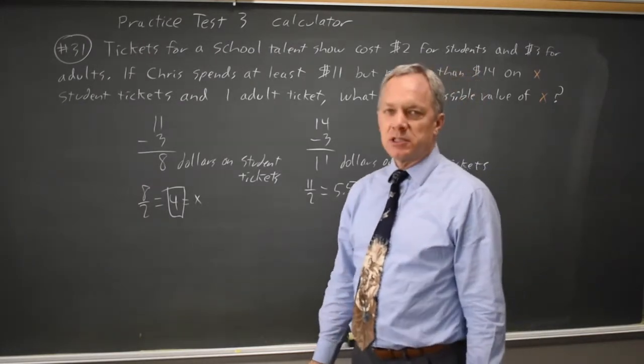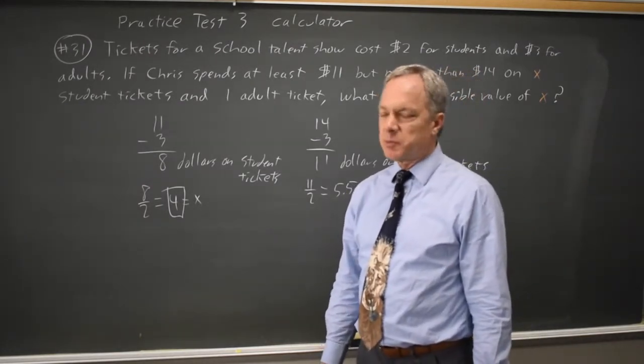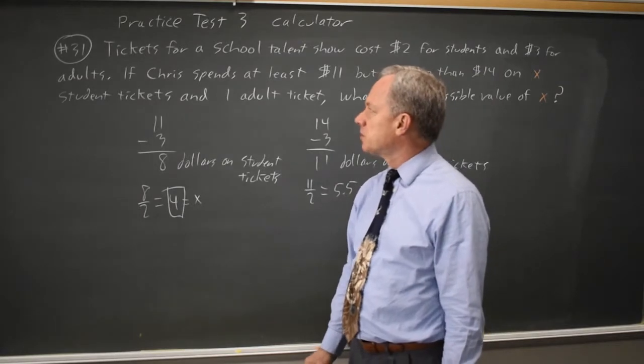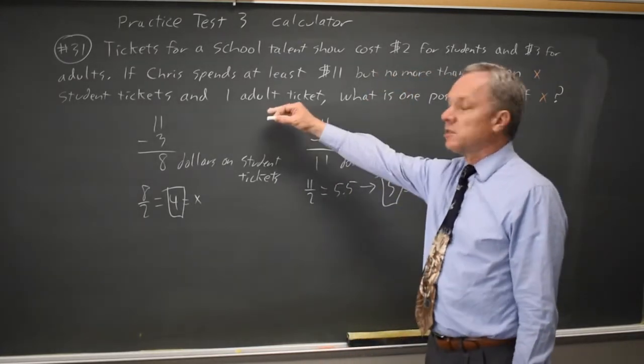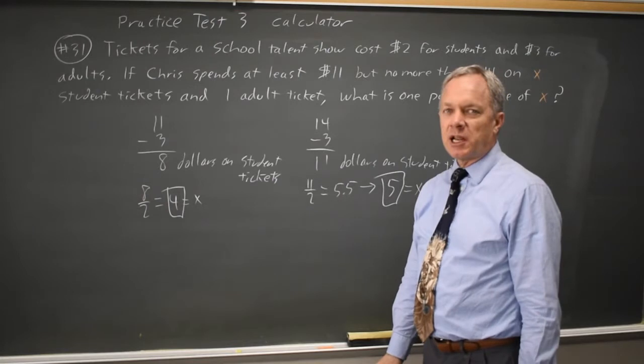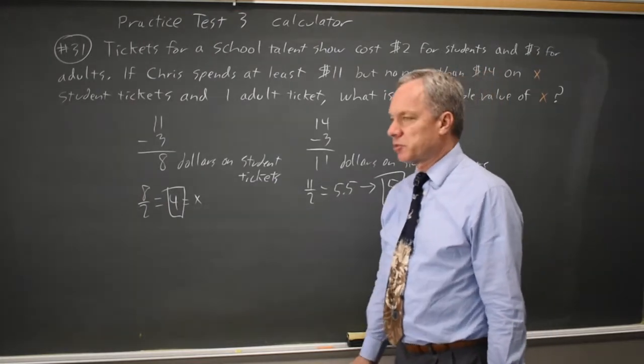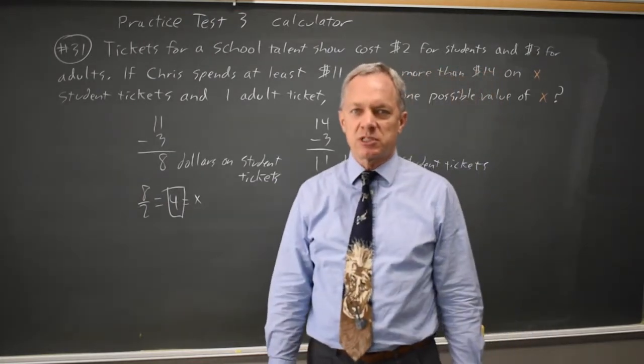Rather than writing an abstract equation, as I often do, I'm keeping this arithmetic as much as possible. I'm taking the total amount, subtracting one adult ticket, and then dividing that by 2 to define the number of student tickets that might have been purchased.